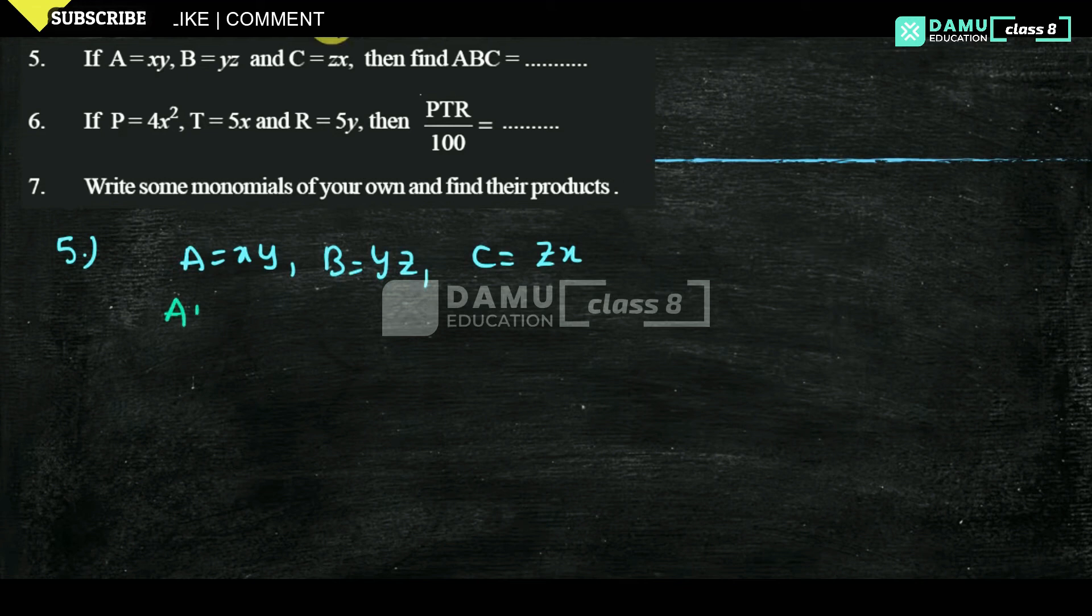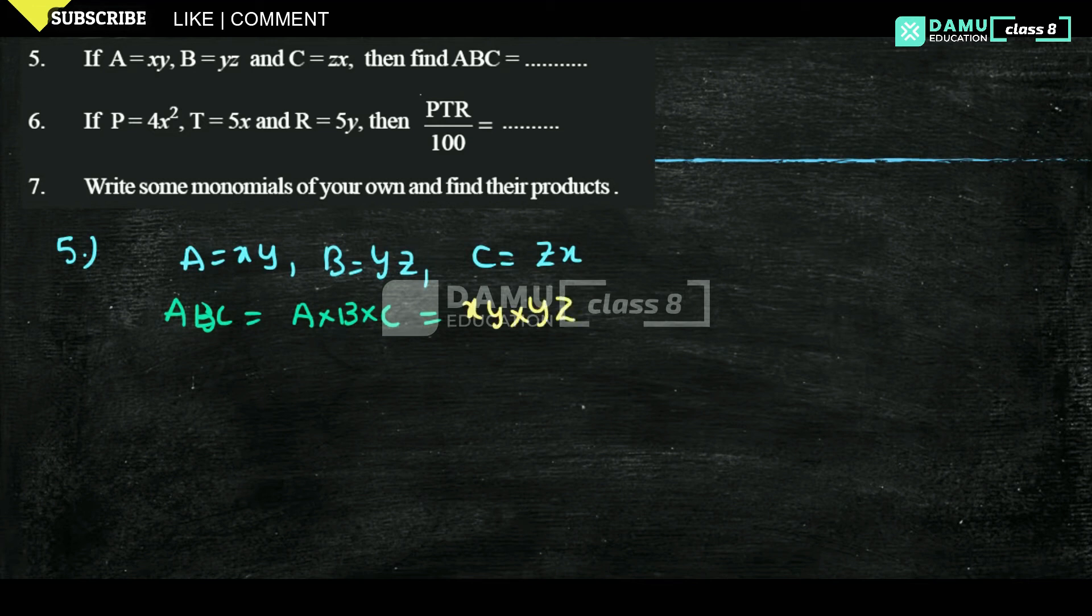What is ABC? ABC is nothing but the product of A into B into C. That will be equal to—let us write—A will be xy into B will be yz into C will be zx. So how many times does it get repeated? Write the exponent values: 1, 1, 1.